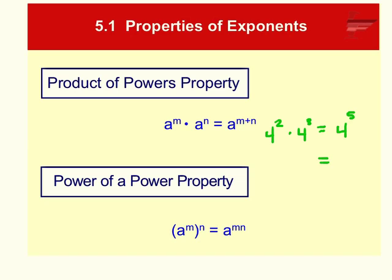If I knew what 4 to the fifth power is, I would write it right there. So if you're multiplying the same base, add your exponents. Our next property is the Power of a Power property. If you have one base — let's say you have 4 that's being squared and then that whole thing is being raised to another power, say cubed — instead of adding your exponents you are going to multiply your exponents. So you multiply exponents when you have the one base. We end up with 4 to the sixth power.